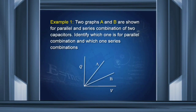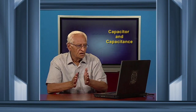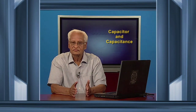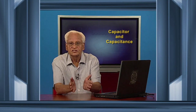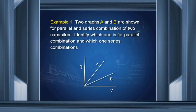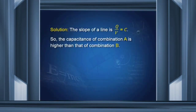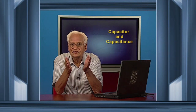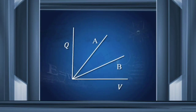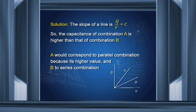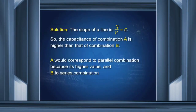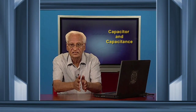Here is an exercise: we have plotted Q against V and there are two curves, A and B, corresponding to two different combinations of two capacitors. Since Q over V equals C, the slope of each line is the capacitance. Since the slope of line B is smaller than the slope of line A, line B must correspond to the series combination — where capacity is reduced — and line A must correspond to the parallel combination, where capacity is increased.